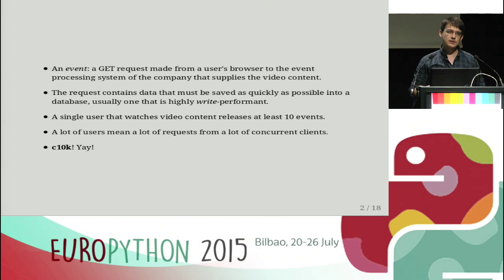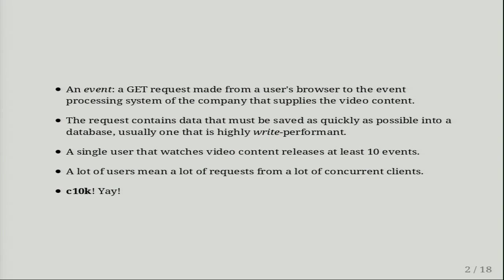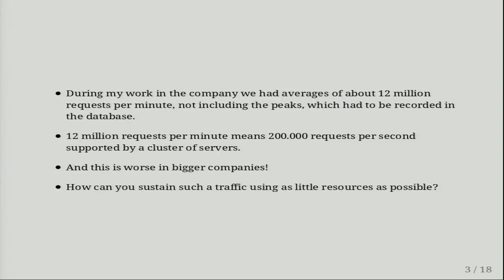These events are not sent all at the same time, which means that the user must keep a continuous connection with the server. That means you have a lot of users sending a lot of events from a lot of concurrent clients. This problem has been seen long before — it is called C10K, and it basically means how can you handle 10,000 concurrent connections on the same machine. During my time in the company, we had averages of about 12 million requests per minute, about 200,000 requests per second, handled by a single server cluster.